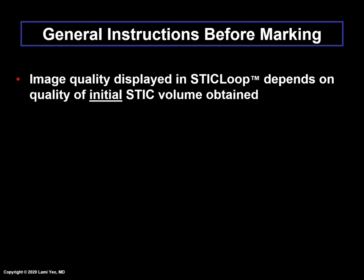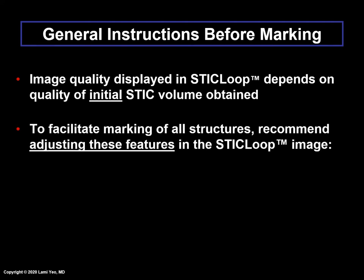The image quality displayed in STICLoop depends on the quality of the initial STIC volume obtained. If the volume has generally poor image quality in which structures are not very clear, this will also be the case for the image quality in STICLoop. This is because the system automatically converts the STIC volume into STICLoop, a two-dimensional cine loop that scrolls in a continuous fashion. To facilitate marking, we recommend adjusting brightness, mid-tones, and contrast based on user preference.